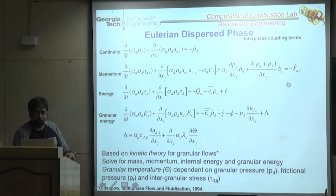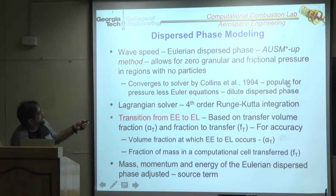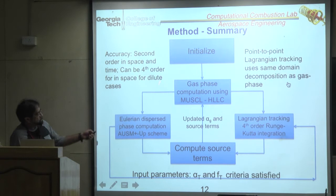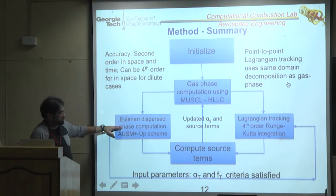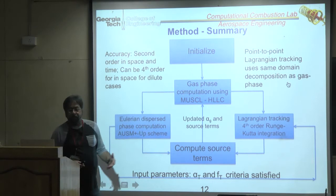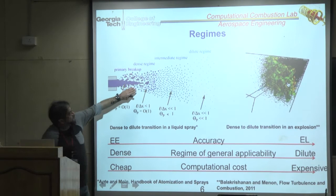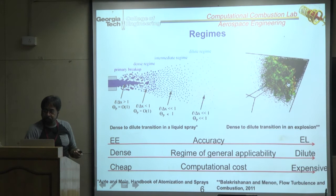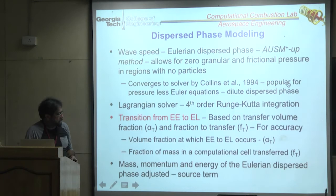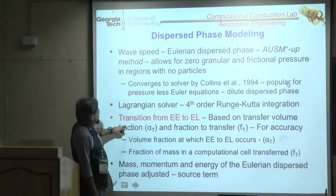Implementation: you initialize the Eulerian phase solver near the dense regime, then decide when to switch to Lagrangian tracking. Eulerian-Eulerian doesn't have explicit particles — just mass fraction — so you must choose criteria for when a certain amount of mass transitions from Eulerian particles to Lagrangian particles.